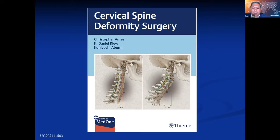There's a question from the attendees about the strategies for distal junctional kyphosis and your lowest instrumented vertebra. You want to go past the apex and drive through the disc space — can you summarize what you do to pick the LIV in your cervical thoracic cases?